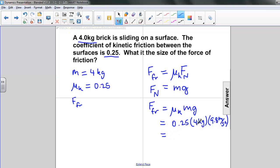0.25 times 4 is 1, and 1 times 9.8 is 9.8. So our force of friction is 9.8 newtons.